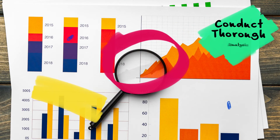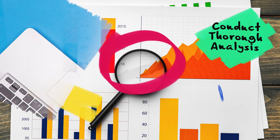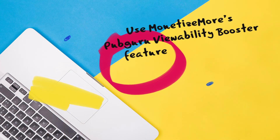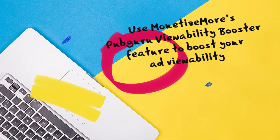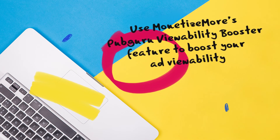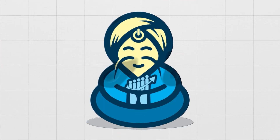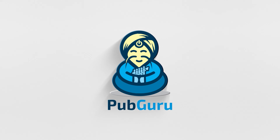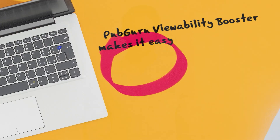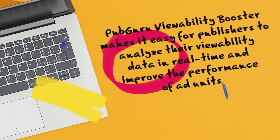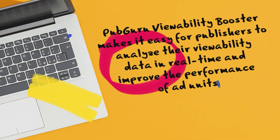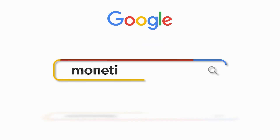Keep working on your ad viewability strategies and split test every two weeks. Before providing pricing and planning services to network advertisers, publishers should conduct a thorough analysis of their ad viewability and audit their inventory. Use MonetizeMore's PubGuru viewability booster feature to boost your ad viewability. With improved viewability you get better vCPMs. The PubGuru viewability booster makes it easy for publishers to analyze their viewability data in real time and improve the performance of ad units for both above-the-fold and below-the-fold ad units. Sign up today and see an immediate increase in your vCPMs.